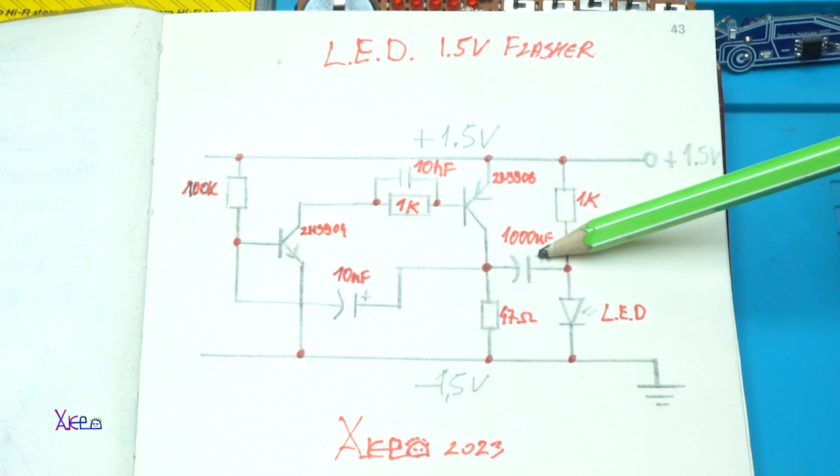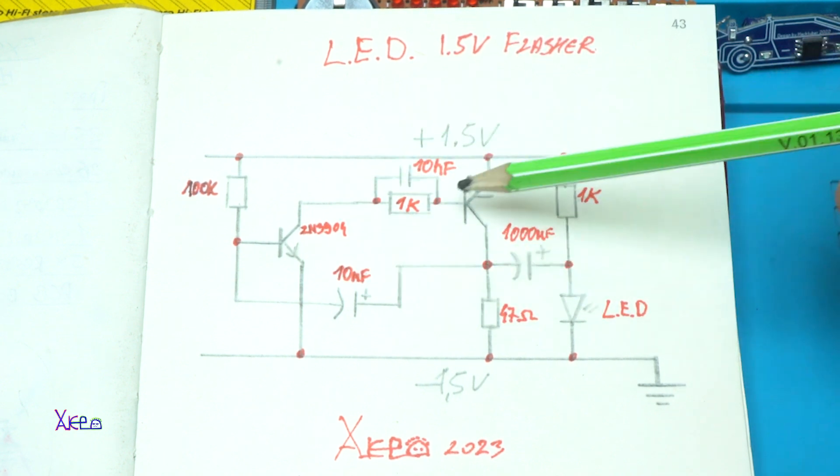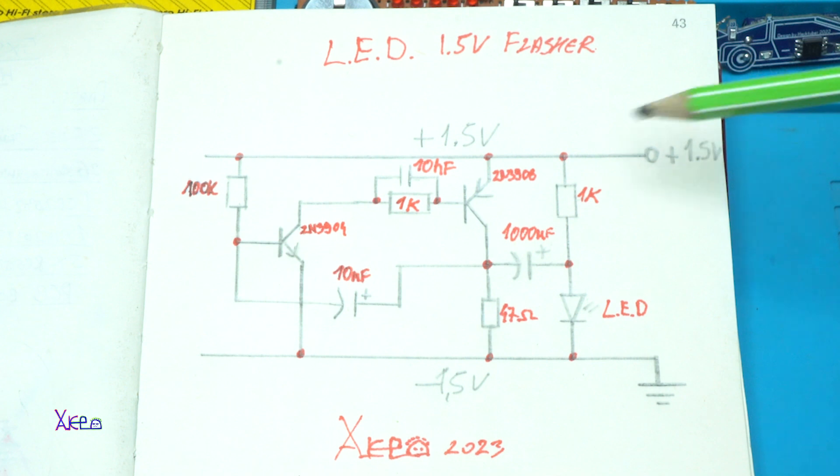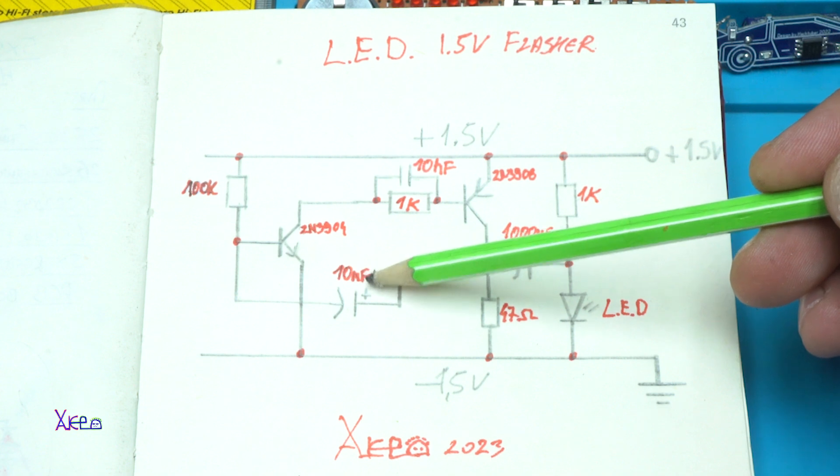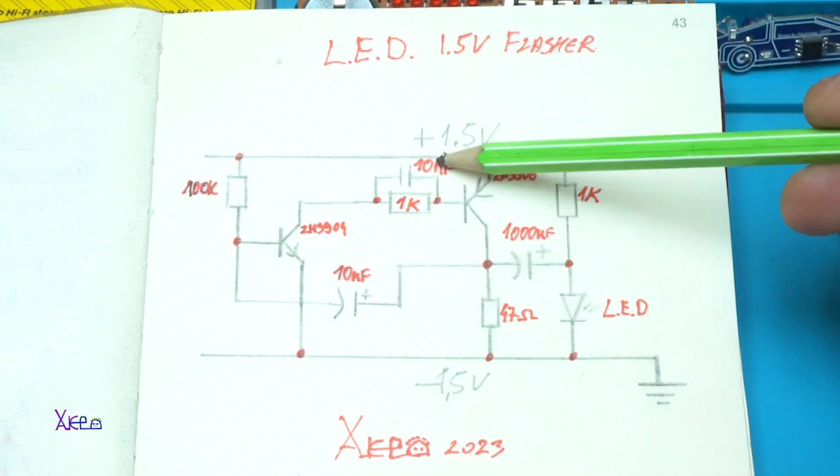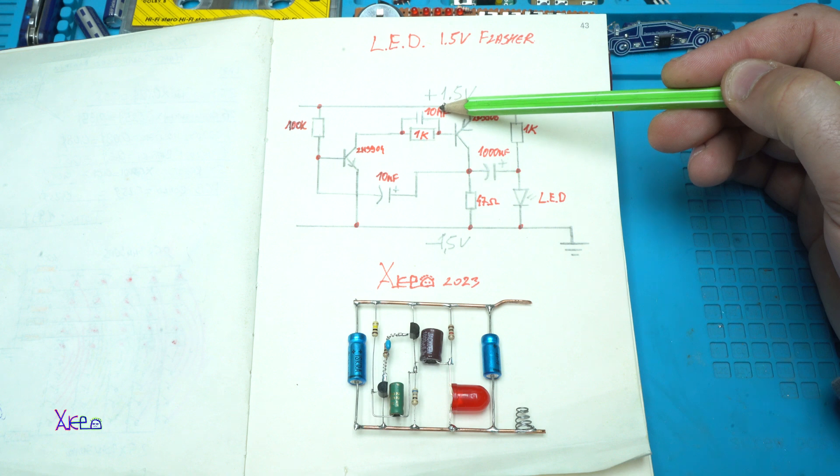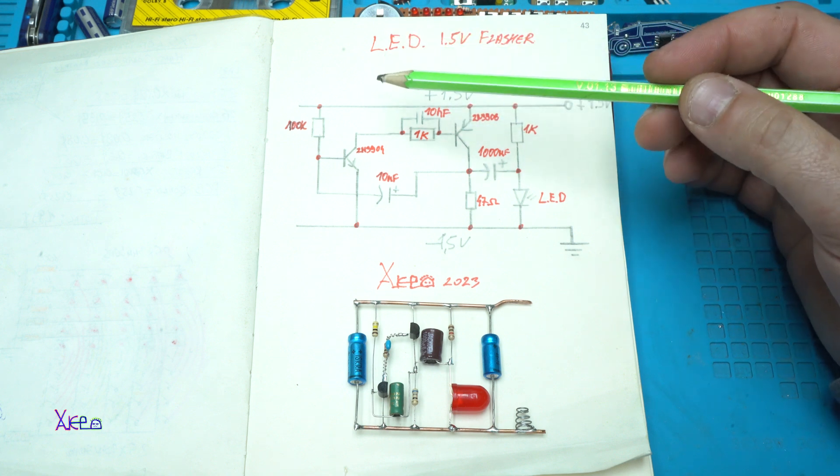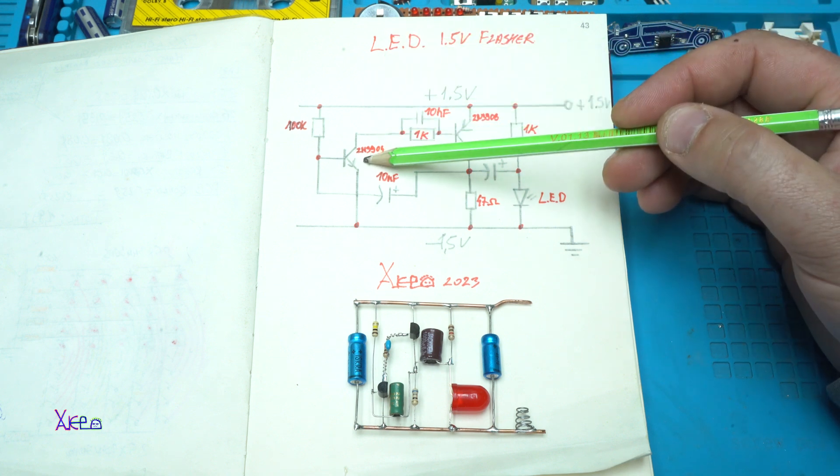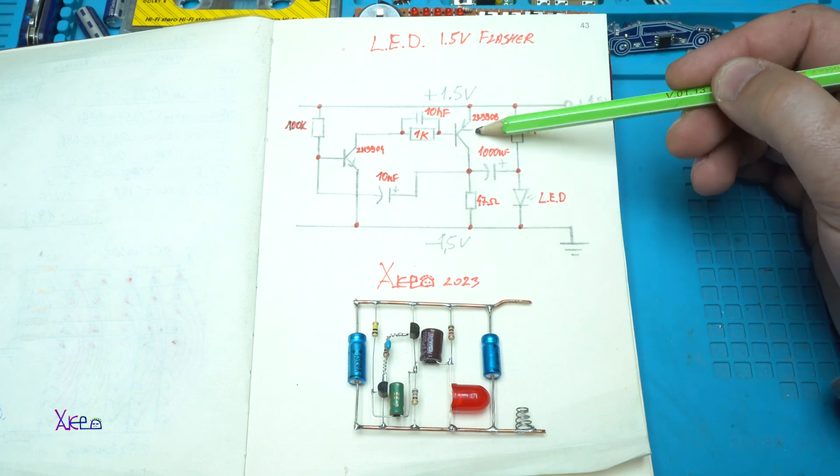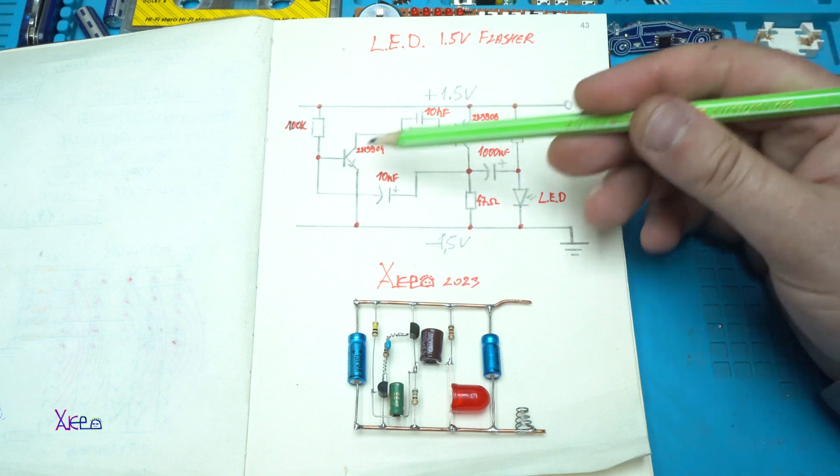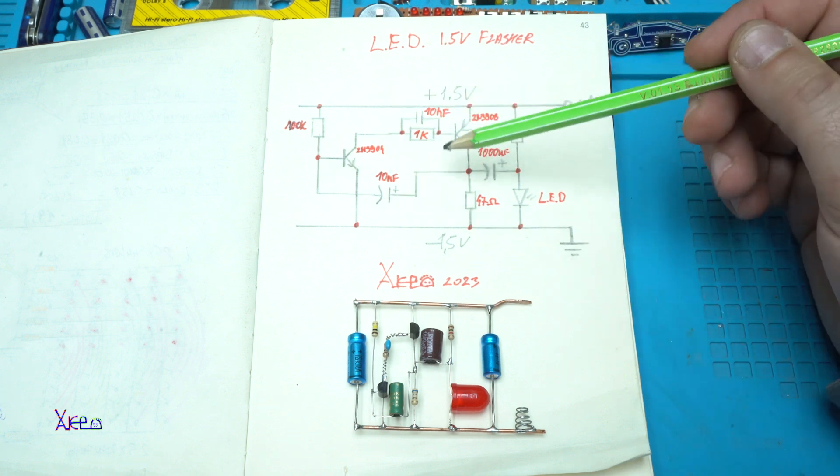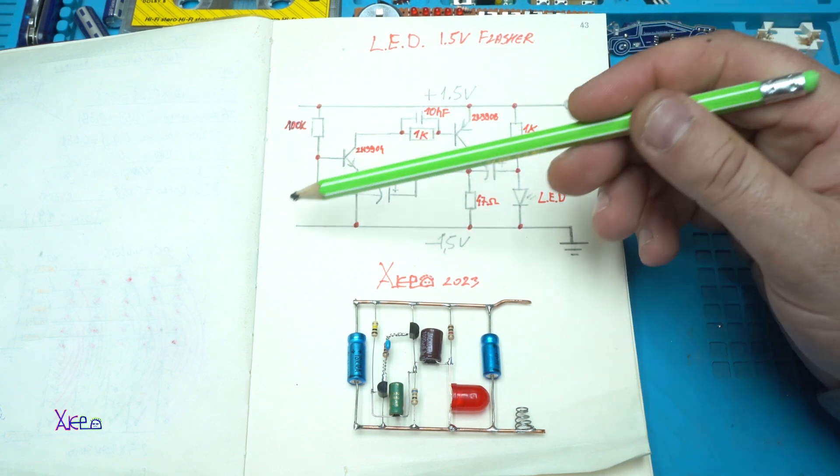We have a 10 microfarad capacitor. This one is a 10 nanofarad capacitor. This is the NPN transistor 3904 and this is the PNP transistor 3906. That's it and all is built on the positive rail and negative rail.